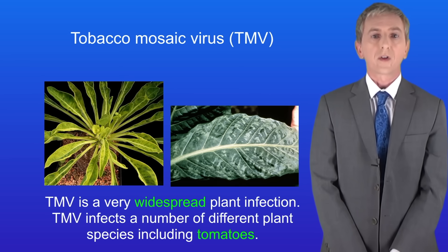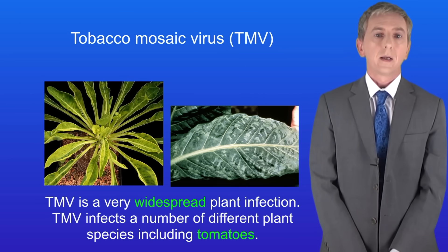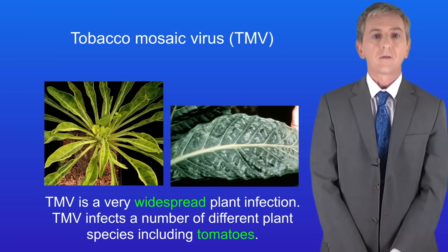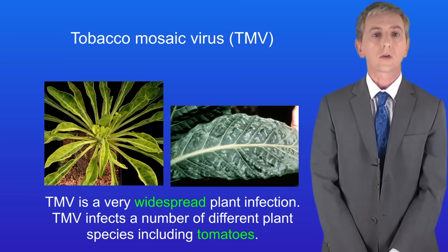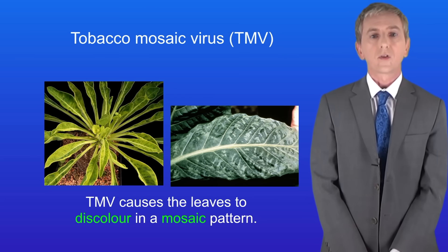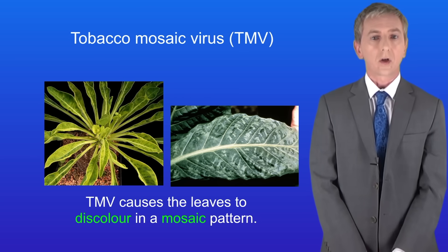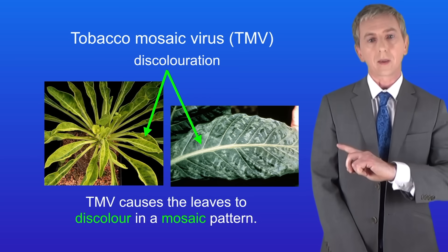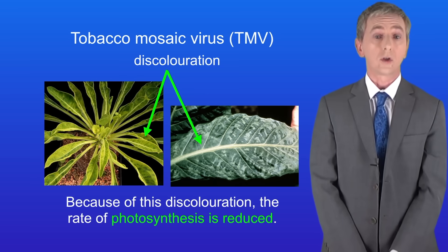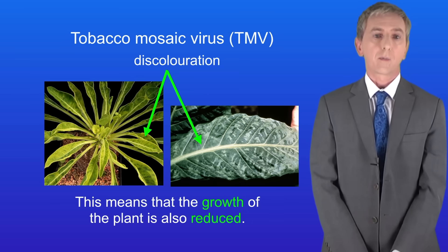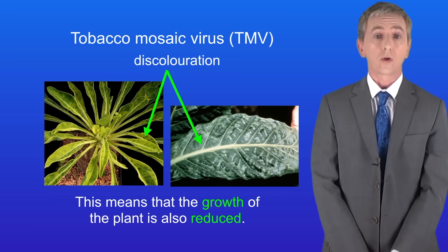We're going to start with tobacco mosaic virus, which is also called TMV. TMV is a very widespread plant infection and it infects a number of different plant species including tomatoes. TMV causes the leaves to discolour in a mosaic pattern like this. Because of this discolouration the rate of photosynthesis is reduced and this means that the growth of the plant is also reduced.